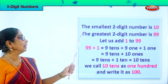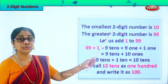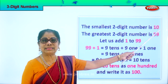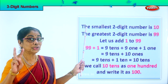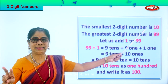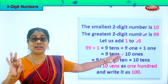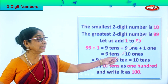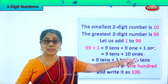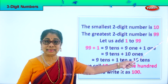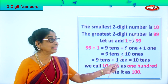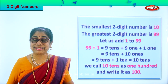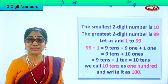The smallest two digit number is ten — one digit, two digits: one, zero, ten. The greatest two digit number is ninety-nine — nine and nine, ninety-nine. So ten is the smallest and ninety-nine is the greatest two digit number.